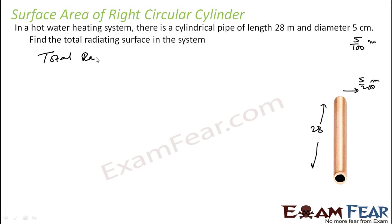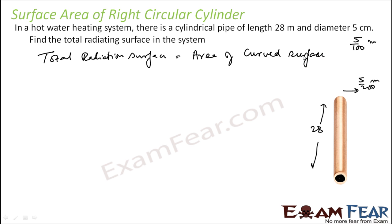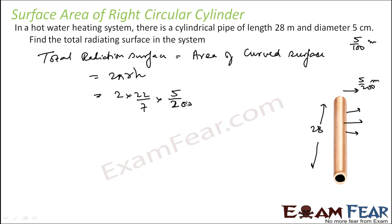The total radiating surface in the system is nothing but the area of the curved surface, because it is the curved surface from where the heat gets radiated. That is nothing but 2πrh. Putting the values: 2 × (22/7) × (5/200) × 28. Since all units are in meters, the result will be in meters square.